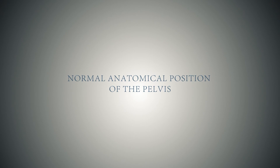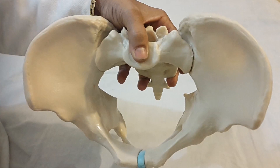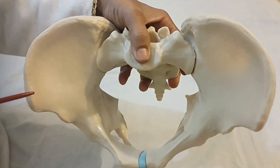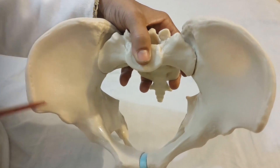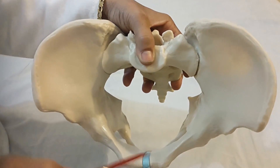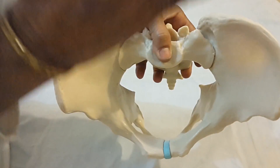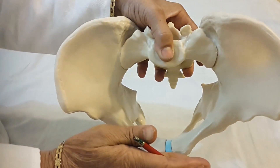Normal anatomical position of the pelvis. In a normal woman in standing posture, the bones of the pelvis are inclined in such a way that both the anterior superior iliac spines and the ventral surface of the pubic symphysis are in the same plane.